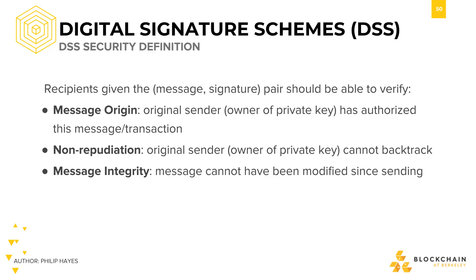In summary, here are some key properties that we should keep in mind. These are essential properties of digital signature schemes that are enabled by the functionality that we went over just now, with Alice sending a message to Bob.